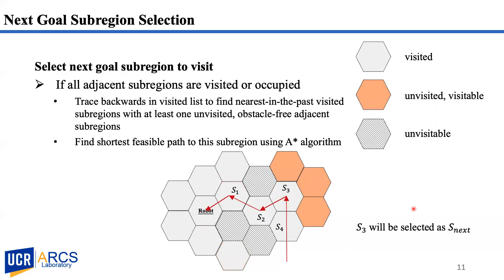If all neighbors have already been visited or occupied, the robot will revisit a visited subregion. This selected subregion must be the nearest past subregion with unvisited, obstacle-free neighbors. We use the A-star algorithm to find the shortest collision-free path to the selected subregion based on obstacle detection results using navigation sensors. In the figure, the red arrow shows the robot's path on the hex grid.